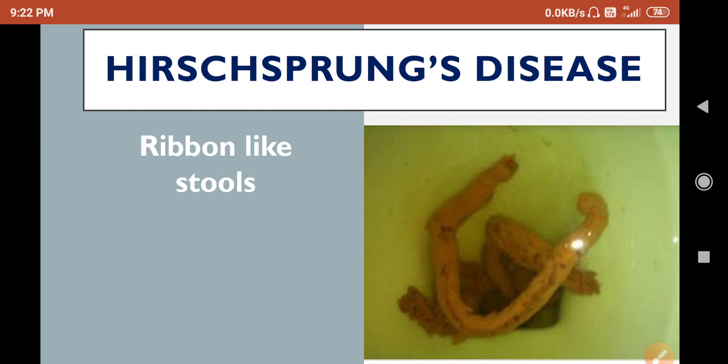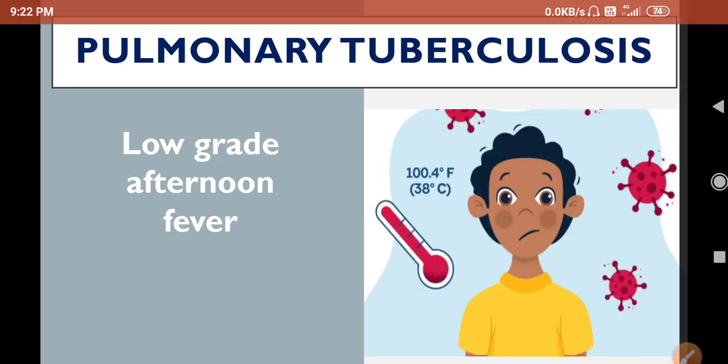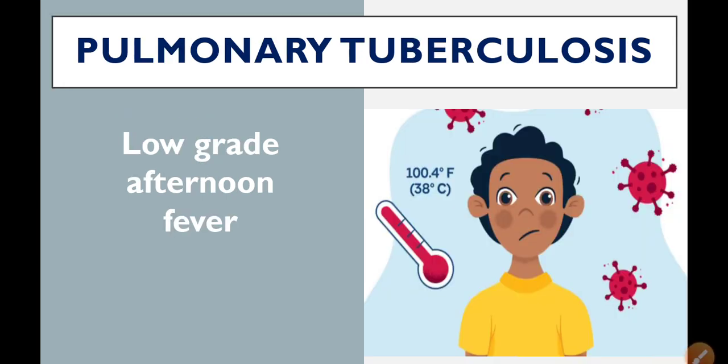The disease is characterized by ribbon-like stool as its primary symptom. Other symptoms include diarrhea and electrolyte imbalance, but the primary symptom is ribbon-like stool. Next: pulmonary tuberculosis.